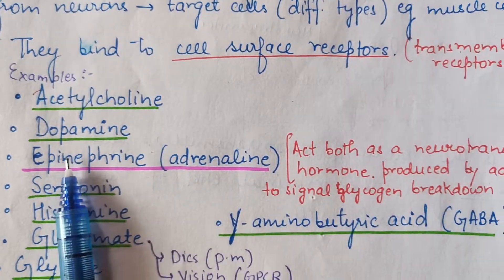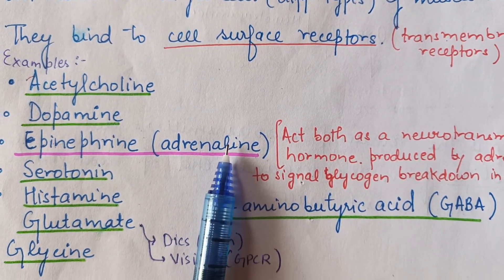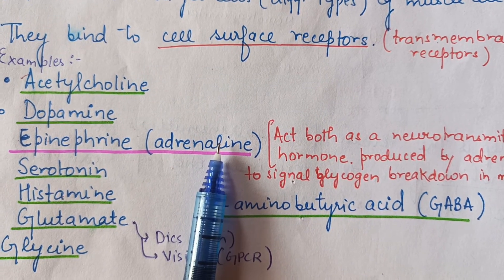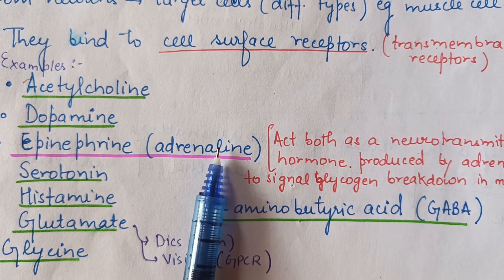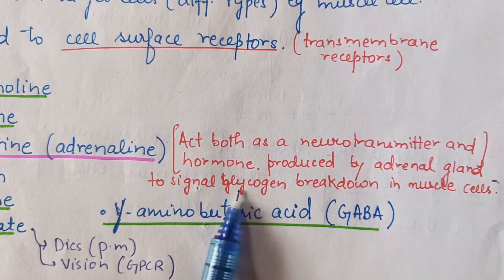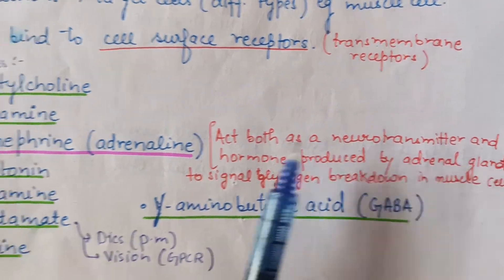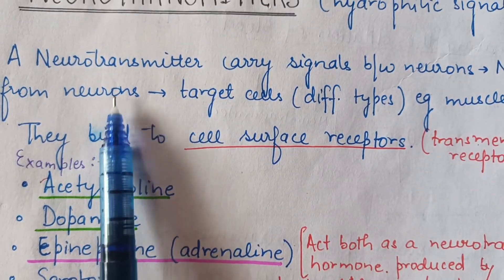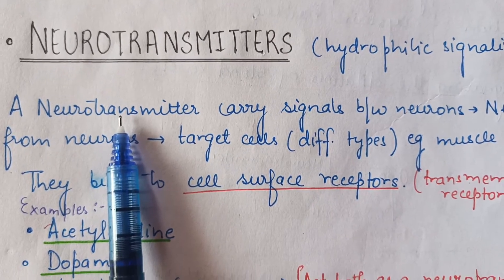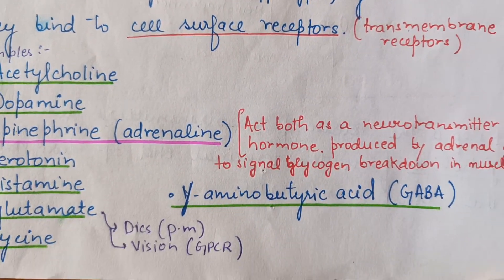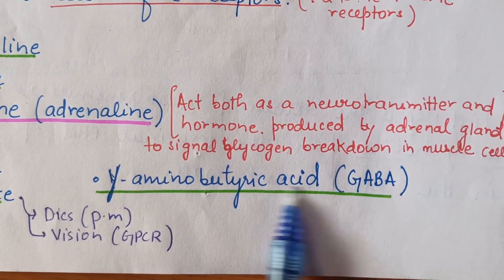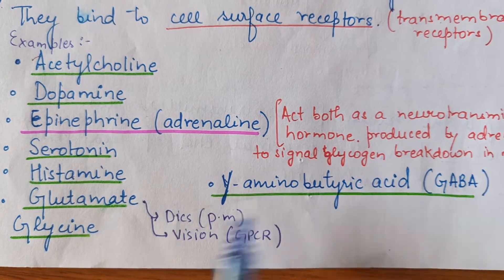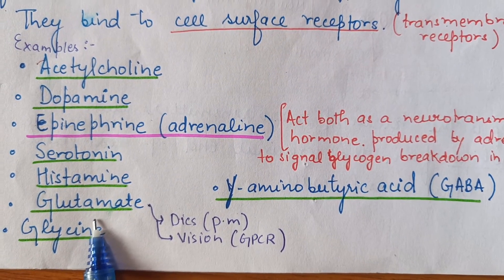Epinephrine or adrenaline acts as both a neurotransmitter and a hormone. The last example is GABA, which is gamma-aminobutyric acid — also a neurotransmitter. Glutamate is also an important neurotransmitter.